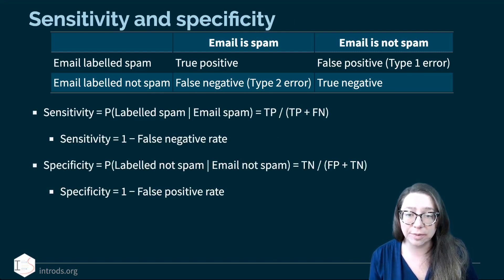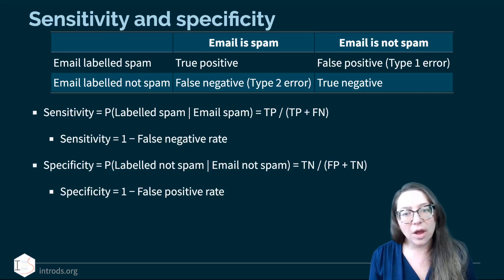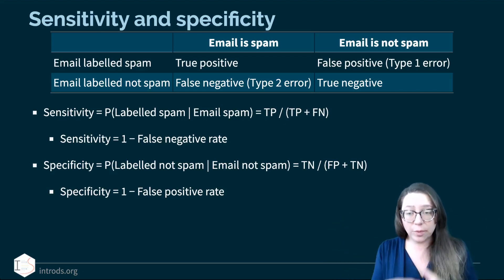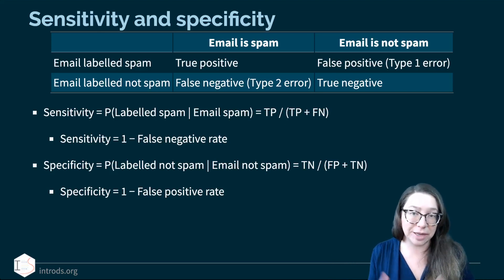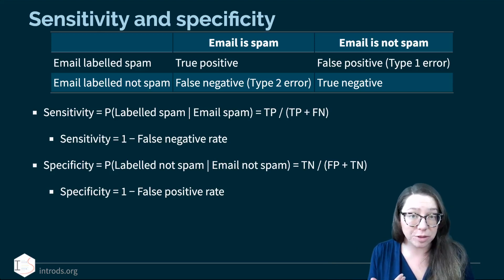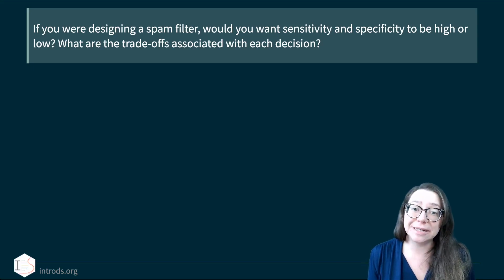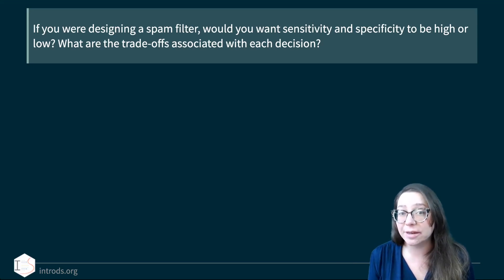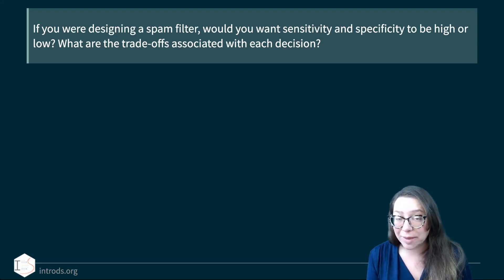Ideally we'd want both false positive and false negative rates to be zero, but as you crank one down the other goes up, so we need to find a balance. That's where sensitivity and specificity come in. Sensitivity is one minus the false negative rate, and specificity is one minus the false positive rate — these are the complements, and we want both to be high. But it's hard to achieve both simultaneously — as one goes down the other tends to go up.